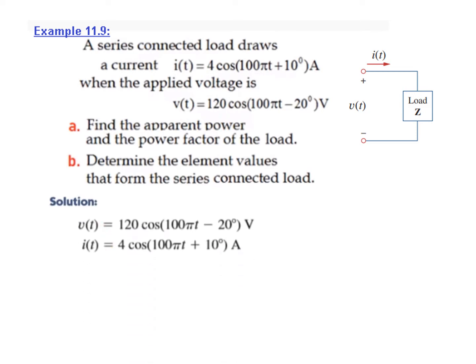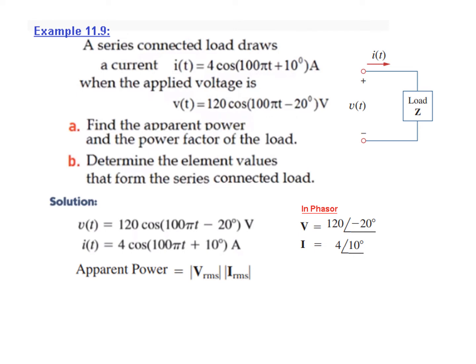For ease, we convert the time-domain values into phasor domain — in phasors we write magnitude and angle. V_rms is V_maximum divided by √2; in our case V_maximum is 120, so V_rms = 120/√2. Similarly, I_rms = I_maximum/√2, where I_maximum is 4, so I_rms = 4/√2.